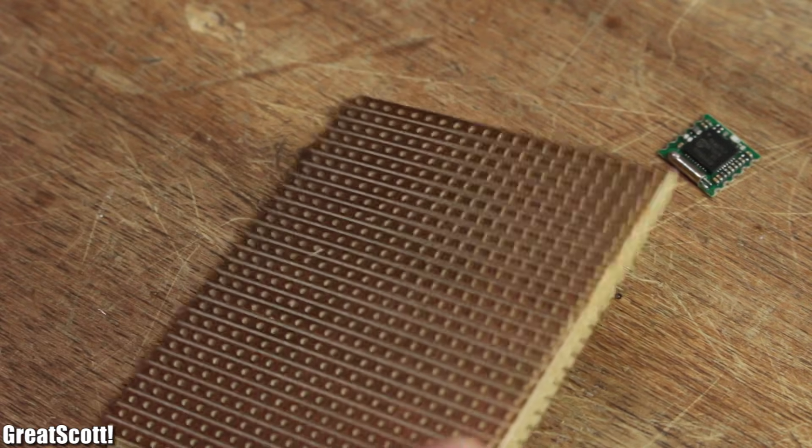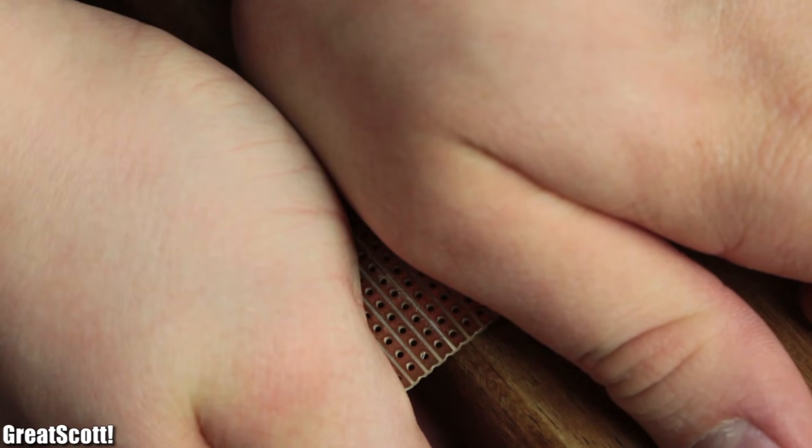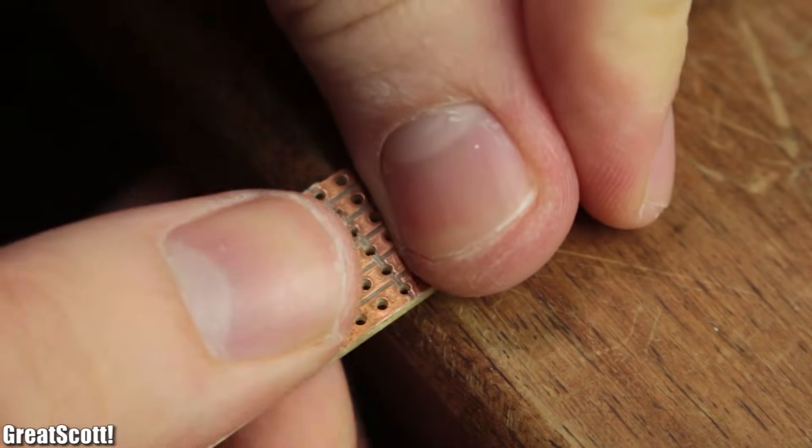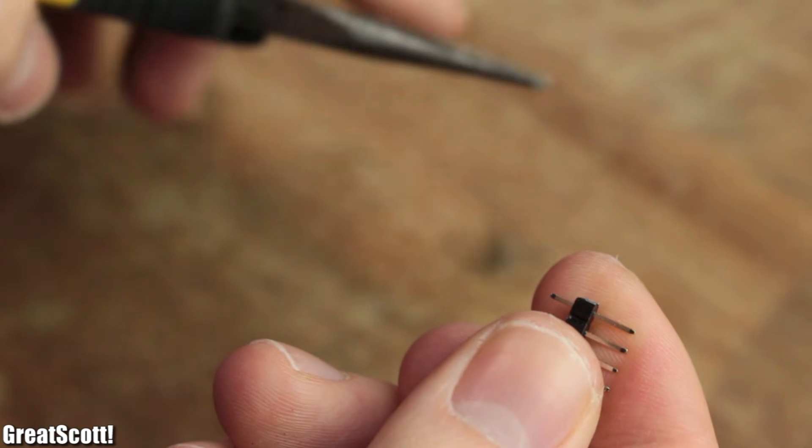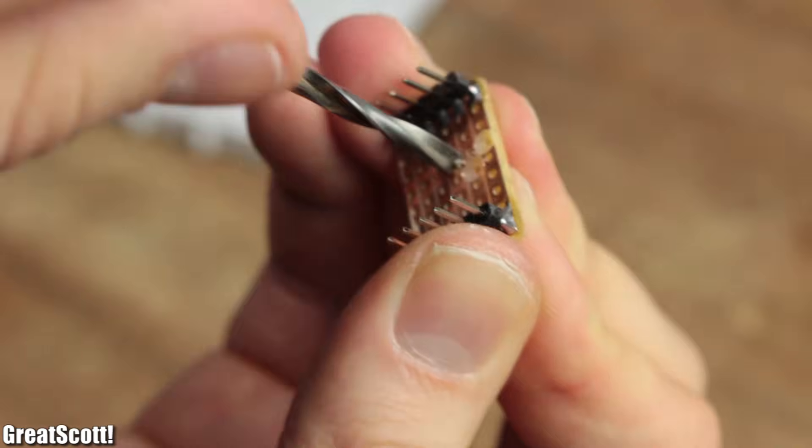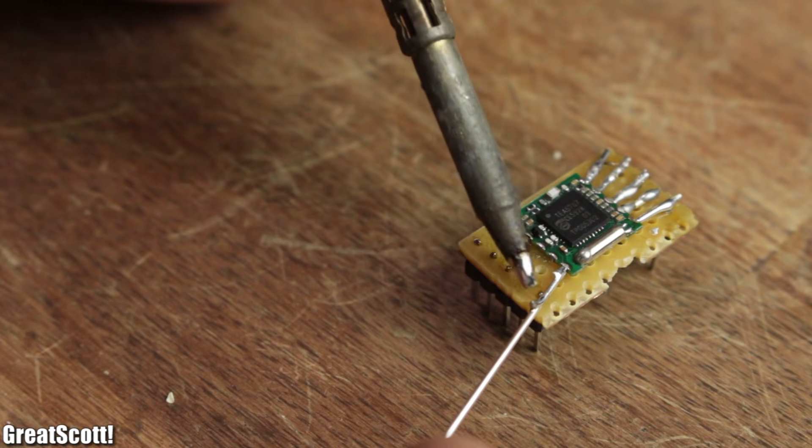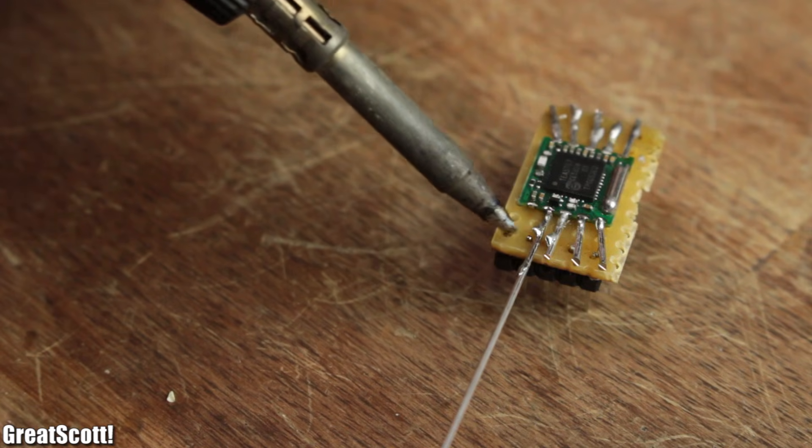Before connecting the IC to the master device, I firstly had to create a small breakout board. For that I simply scored and snapped a stripboard, soldered a 5-pin male header onto its short sides, interrupted the copper traces in the middle,